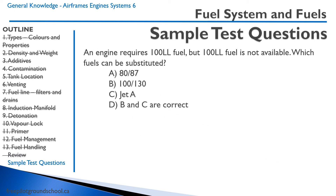Practice question: An engine requires 100LL fuel, but 100LL is not available. Which fuels can be substituted? Remember, we can only go up in octane, so 100/130 would work. Jet A is not gasoline — it's jet fuel, similar to diesel or kerosene — so that eliminates those options. The correct answer is 100/130.